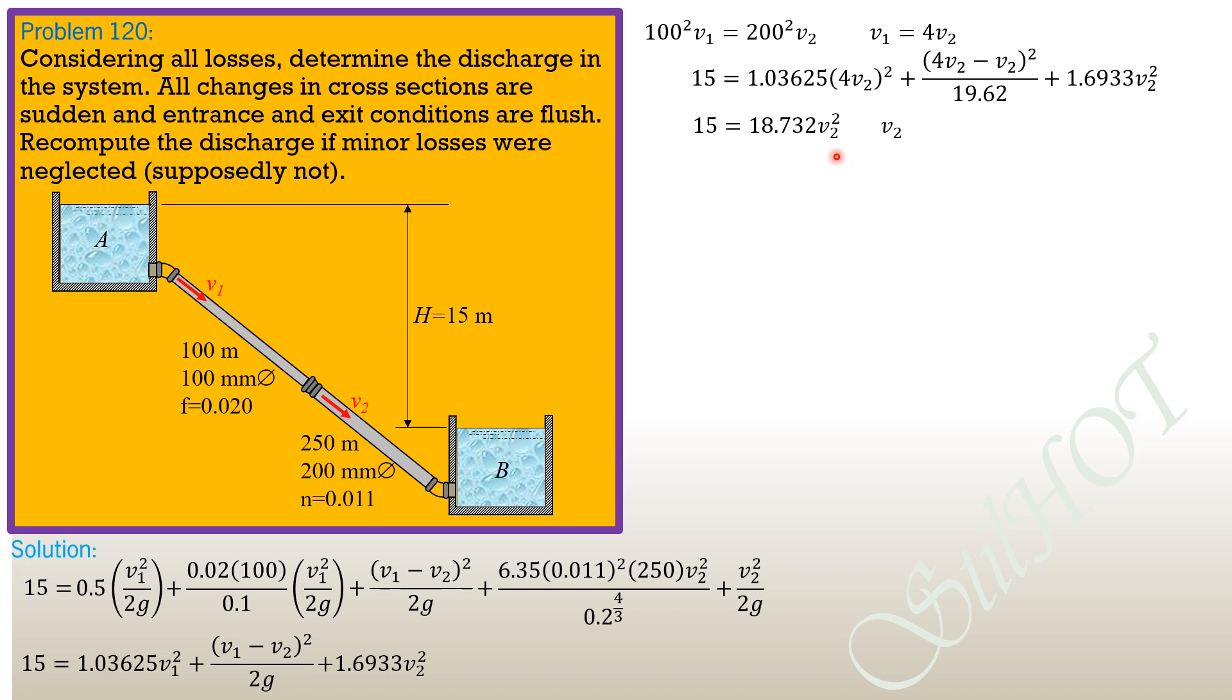From here, we can compute V2 and V2 is equal to 0.89486 meter per second.